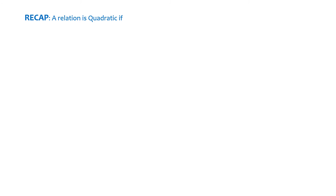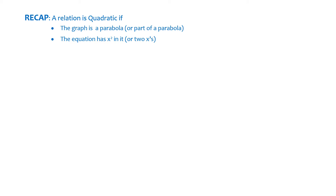Recap. A relation is quadratic if the graph is a parabola, or sometimes you'll only see part of a parabola. The equation has x squared in it, or it has two x's — that's how you can tell if it's quadratic. Or the second differences are constant. So you can tell by looking at the graph, the equation, or if you have a table of values, you can look at the second differences.